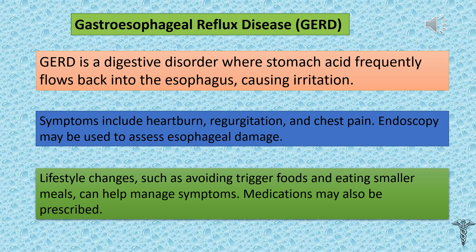Gastroesophageal reflux disease, or GERD, is a digestive disorder where stomach acid frequently flows back into the esophagus, causing irritation. Symptoms include heartburn, regurgitation, and chest pain. Endoscopy may be used to assess esophageal damage. Lifestyle changes such as avoiding trigger foods and eating smaller meals can help manage symptoms. Medications may also be prescribed.